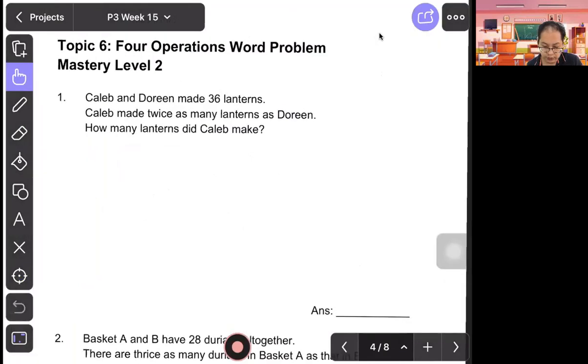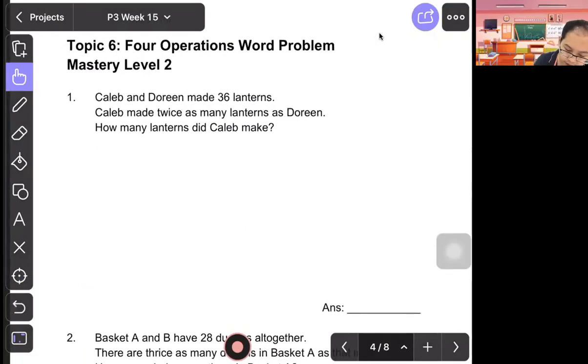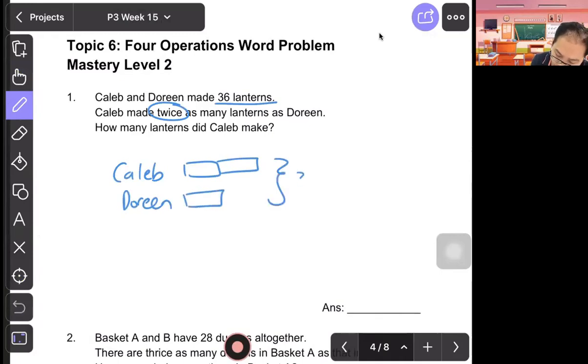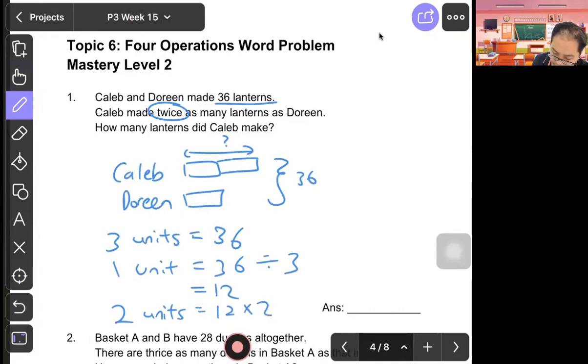Let's look at the question. Caleb and Doreen made 36 lanterns. Caleb made twice as many lanterns as Doreen. How many lanterns did Caleb make? So Caleb twice, two units. Doreen one unit. All together, 36. So how to find Caleb? Three units equal 36. One unit will be 36 divided by 3, which is 12. And because they asked for Caleb, there is two units. 12 times 2 gives you 24. Answer is 24.